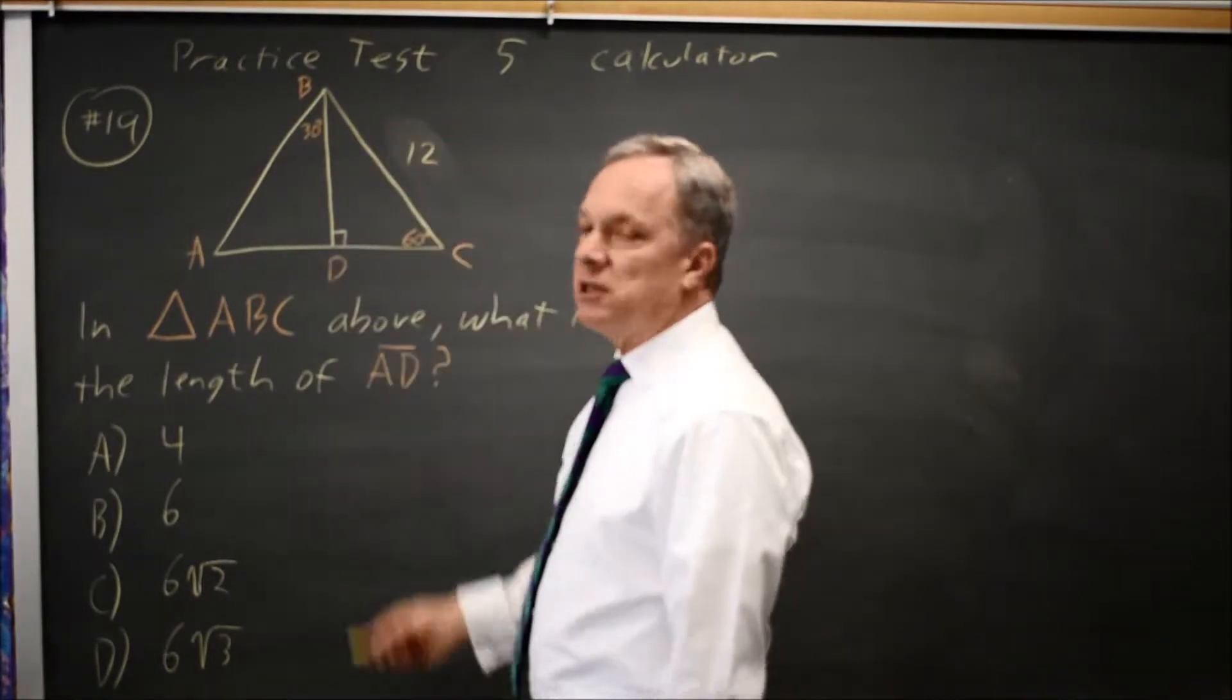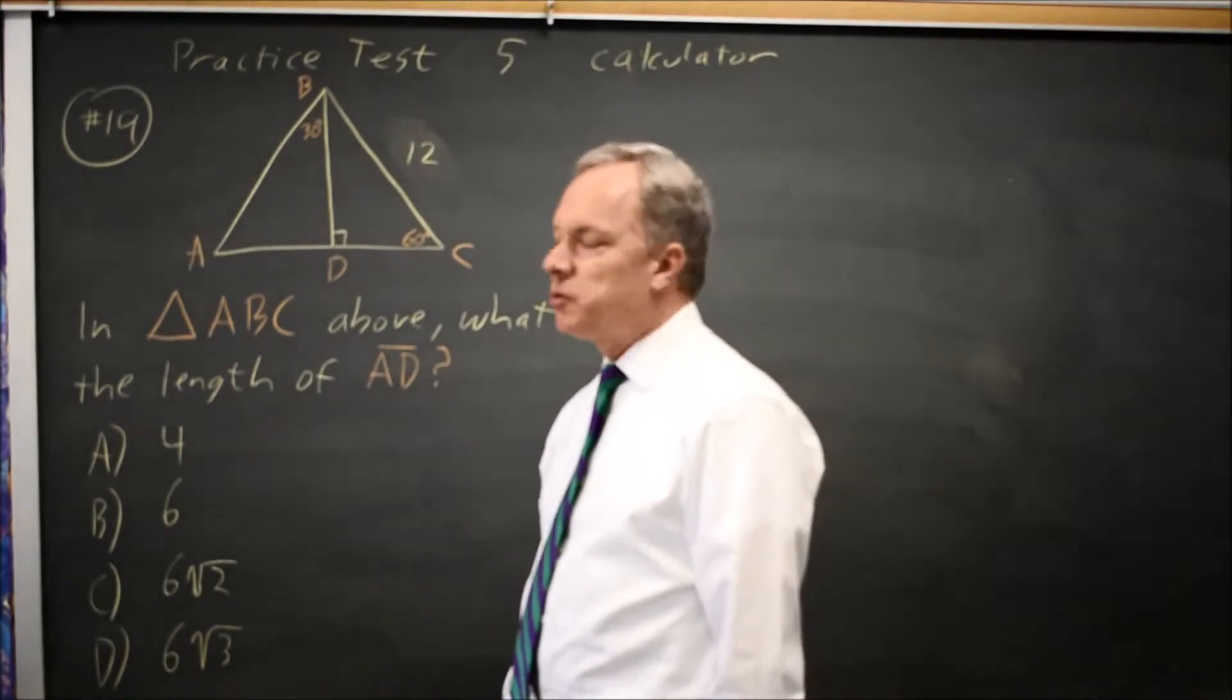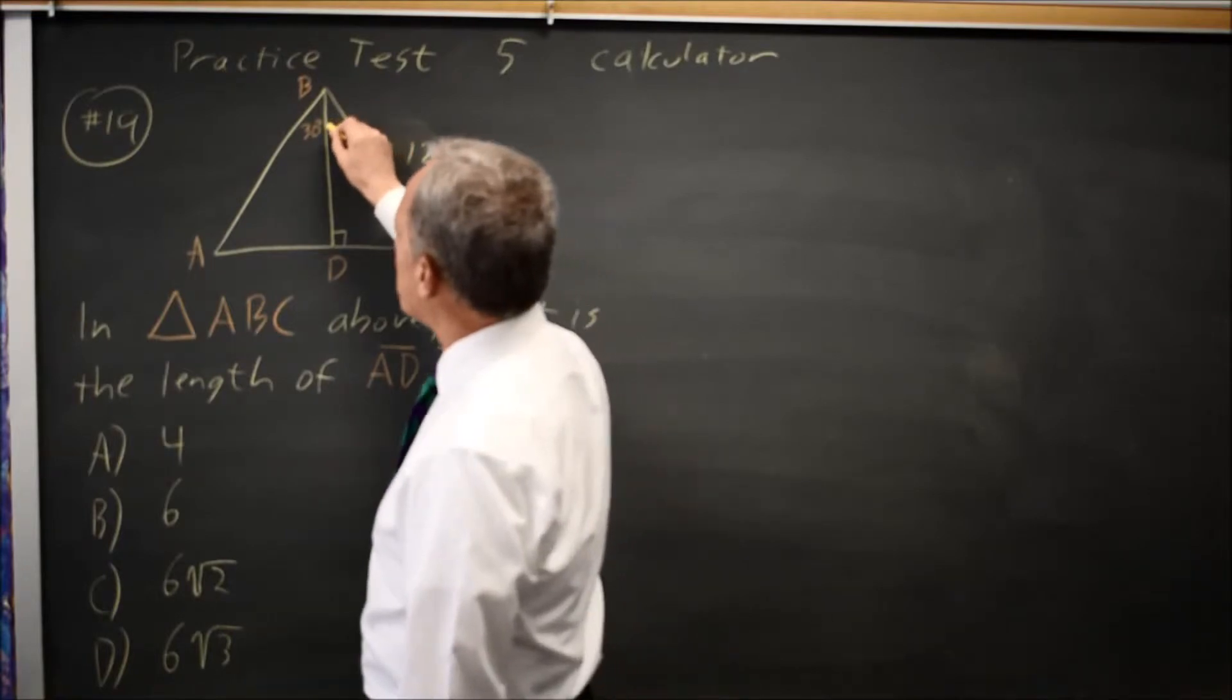triangle BCD, the angles add up to 180 degrees. The angles of a triangle always add to 180. So we have 90 plus 60 is 150. This angle here will be 30.